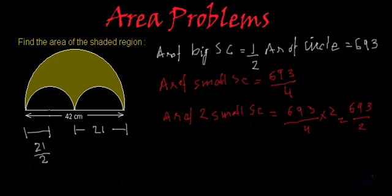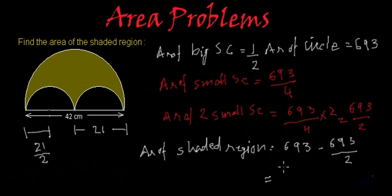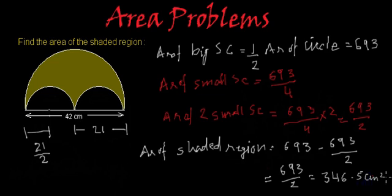So the area of the shaded region will be the area of the big semicircle minus the area of the two small semicircles. That is 693 minus 693/2, which equals 693/2, giving us 346.5 cm². So 346.5 cm² is the area of the shaded region.